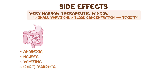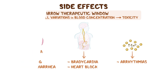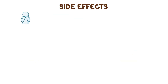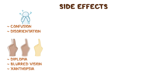In addition, due to vagus nerve stimulation, digoxin can result in conduction defects like bradycardia and even heart block. Additionally, the increased intracellular calcium may predispose clients to arrhythmias. Other side effects include neurologic symptoms such as confusion, disorientation, and visual disturbances like diplopia, blurred vision, or xanthopsia, which is when things appear yellow.